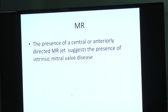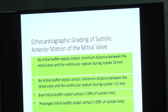The presence of a central or anteriorly directed MR jet suggests intrinsic mitral valve disease. When the anterior mitral leaflet is pulled into the LVOT, the posterior leaflet cannot come forward to meet it, resulting in a posteriorly directed mitral regurgitation. If MR is anterior or central, consider intrinsic mitral valve pathology. There are grading systems for systolic anterior motion of the mitral valve.